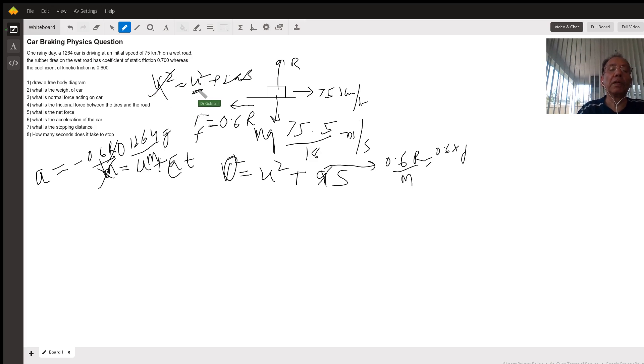So u is 75 kilometers per hour. Since a is negative, u² equals a positive value times distance. Therefore, s equals u² divided by two times deceleration, converting from 75 kilometers per hour to meters per second.